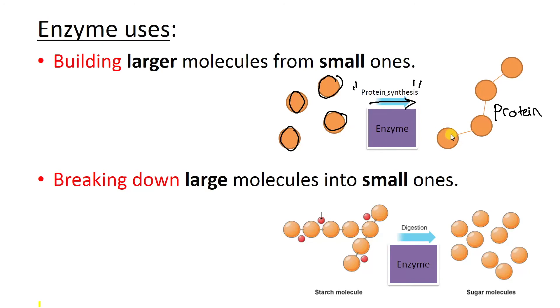So building things together. But they are also responsible for breaking things down. So breaking down large molecules into small ones. So over here we've got some molecules, and they're all joined up by these chemical bonds. This is called starch, which is in a lot of our food that we eat.